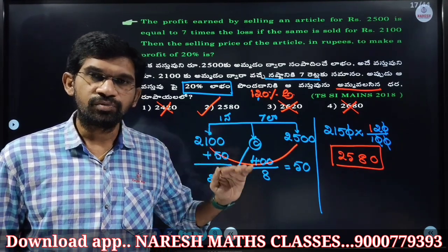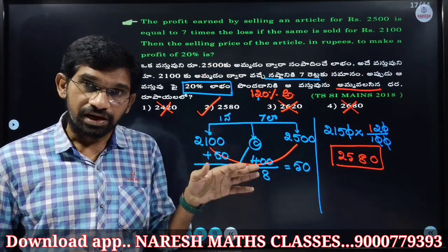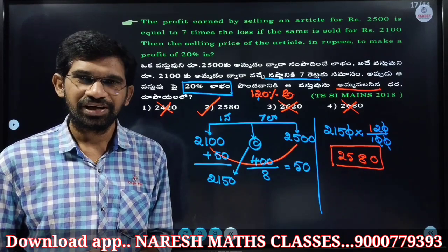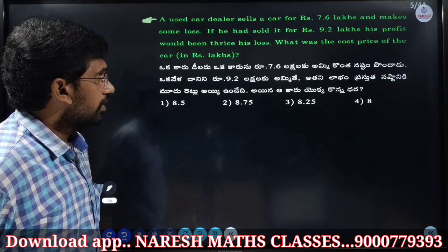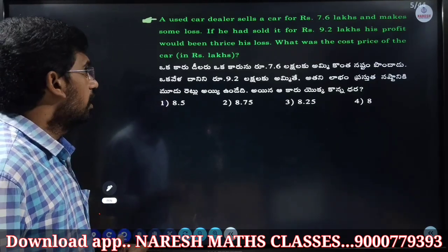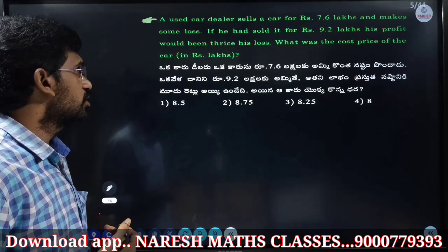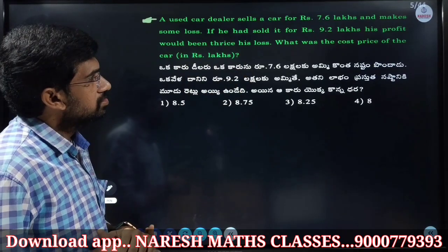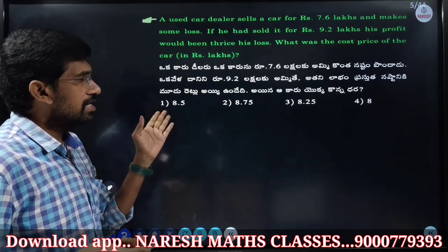Before starting the calculation, focus on understanding the problem first. A used car dealer sells a car at 7.6 lacs and makes some loss. If he had sold it for 9.2 lacs, his profit would be thrice his loss. What was the cost price of the car?